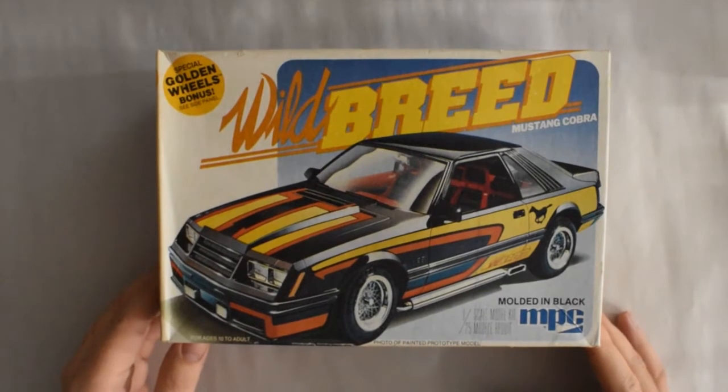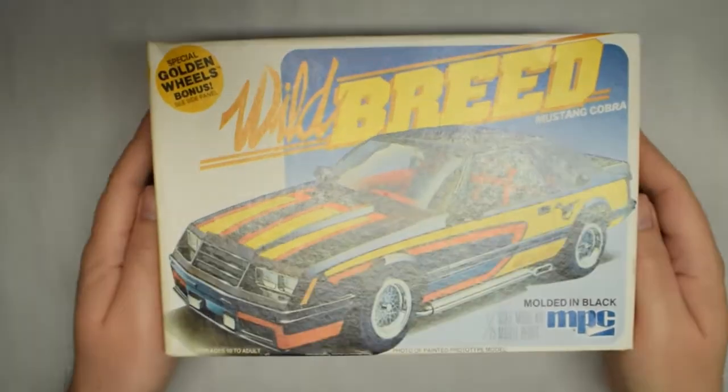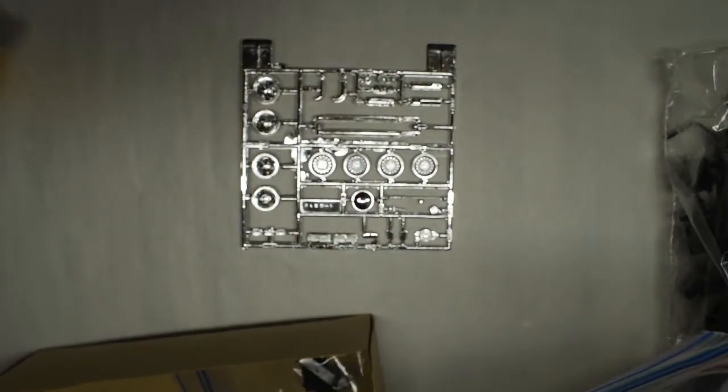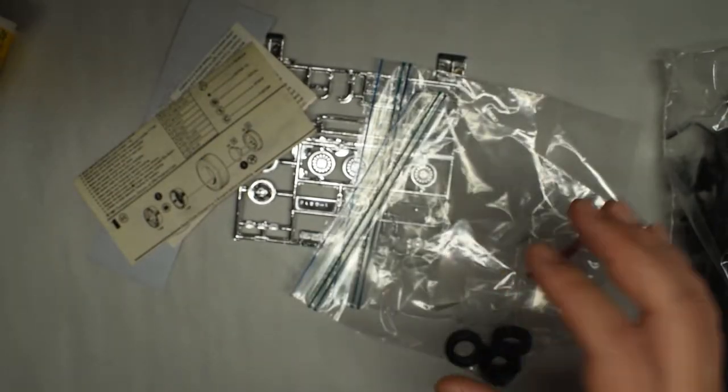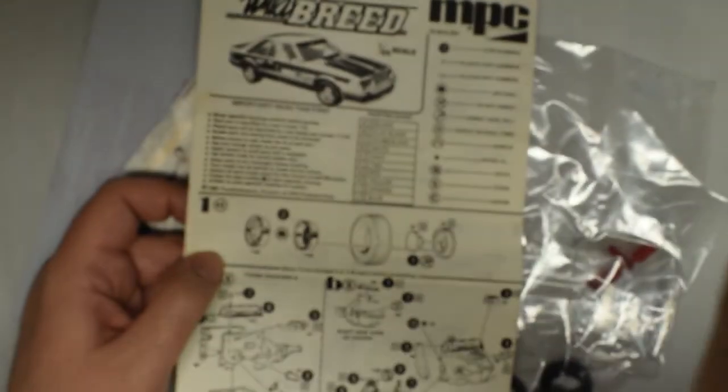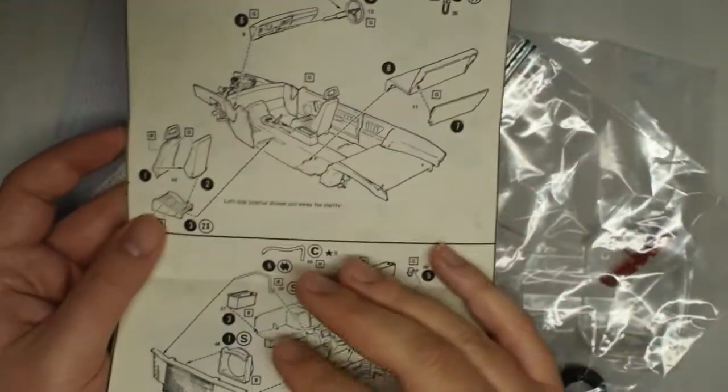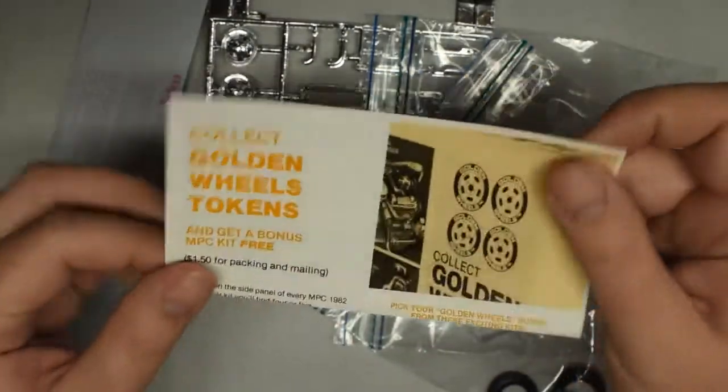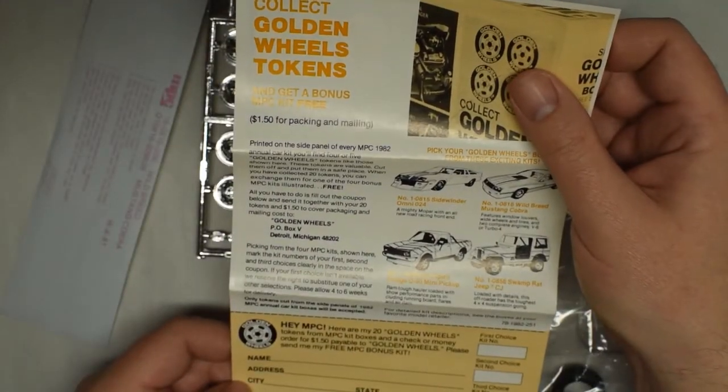Let's look at the MPC kit. Now, I will look at the MPC Mustang kit. Get some light on here. And okay, let's start again with the chrome and the clear. Get that part out of the way, the easy part out of the way first, right? Okay. So, instruction sheet. Typical of MPC of the period. And we got the golden wheels offer. That would have been fun.